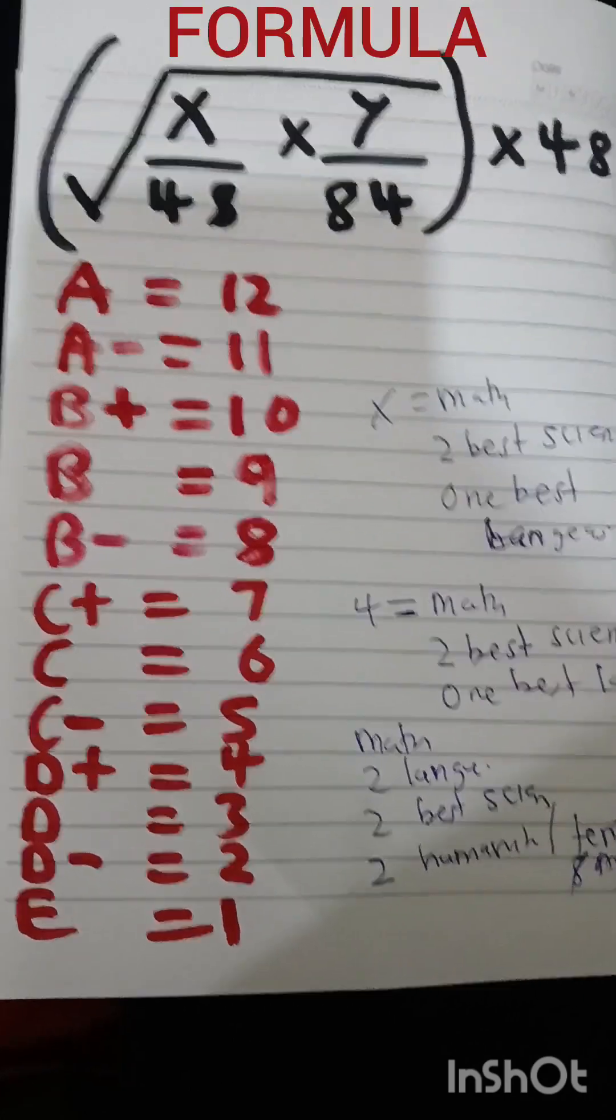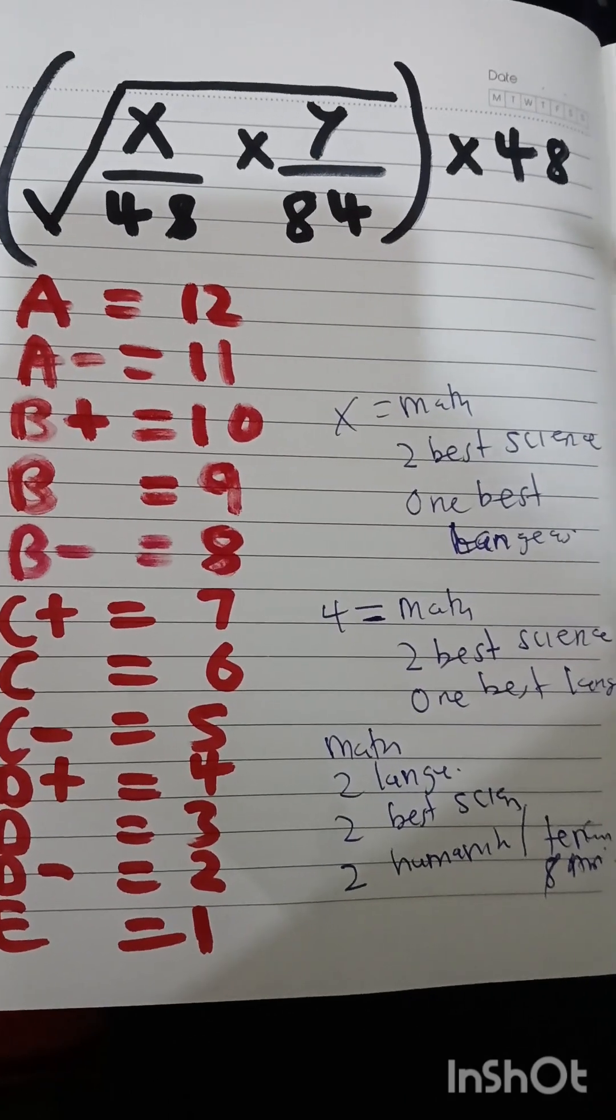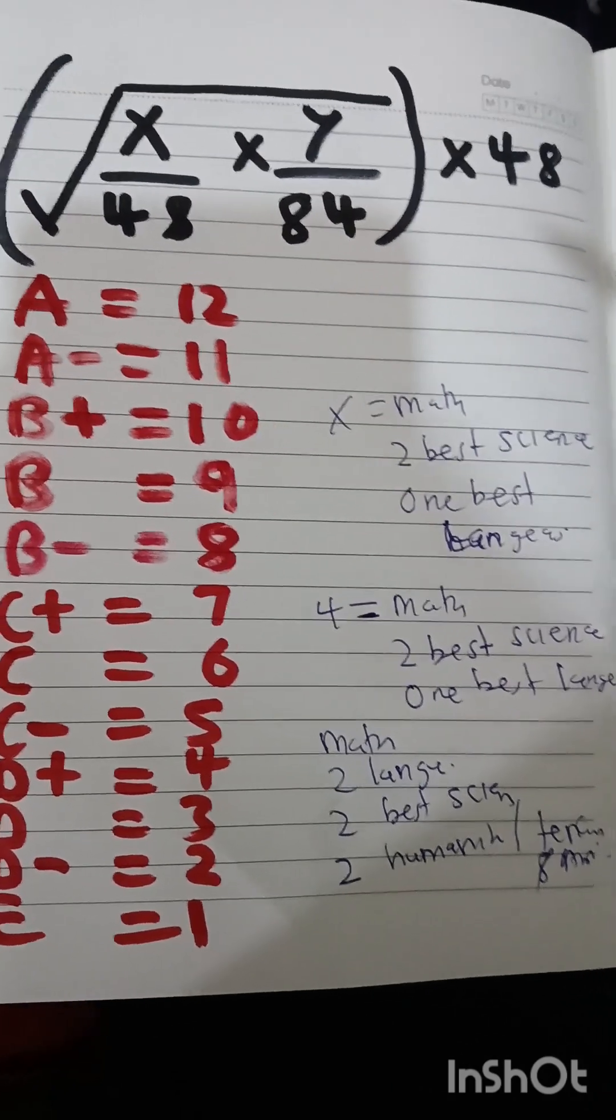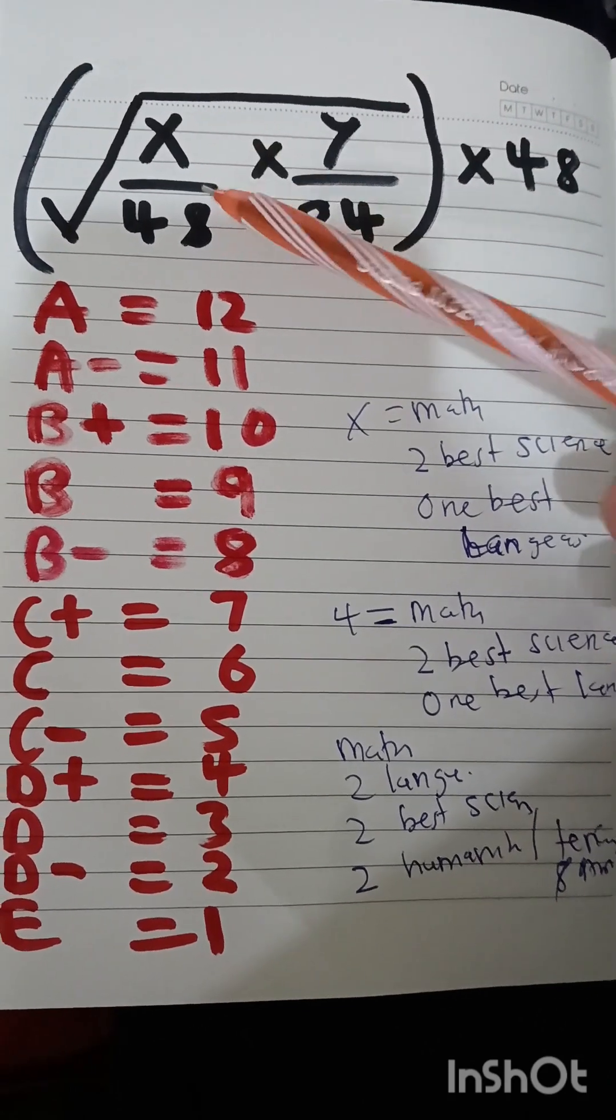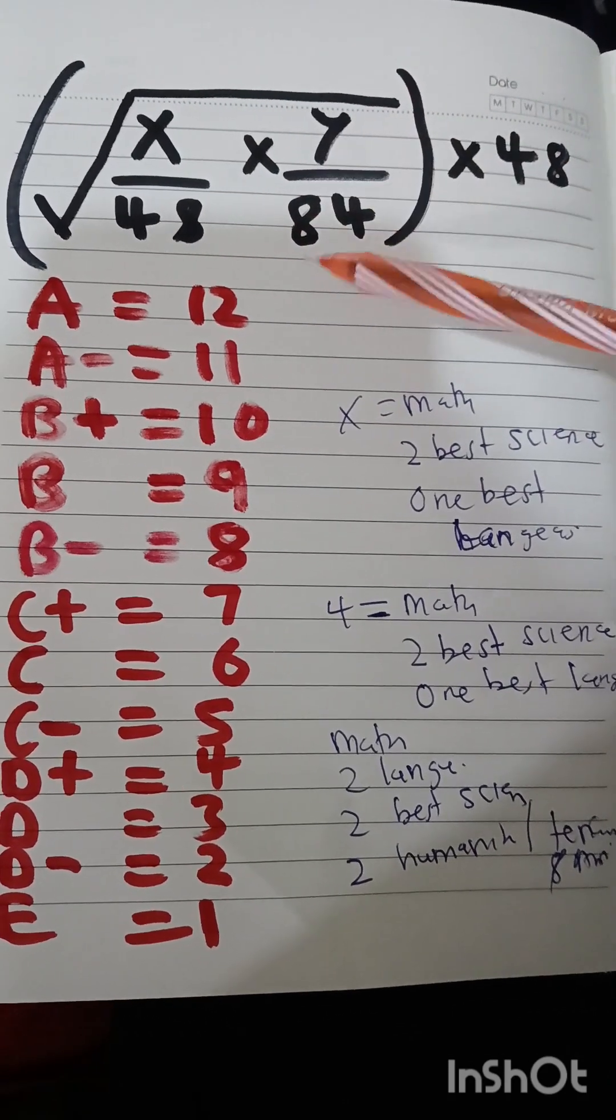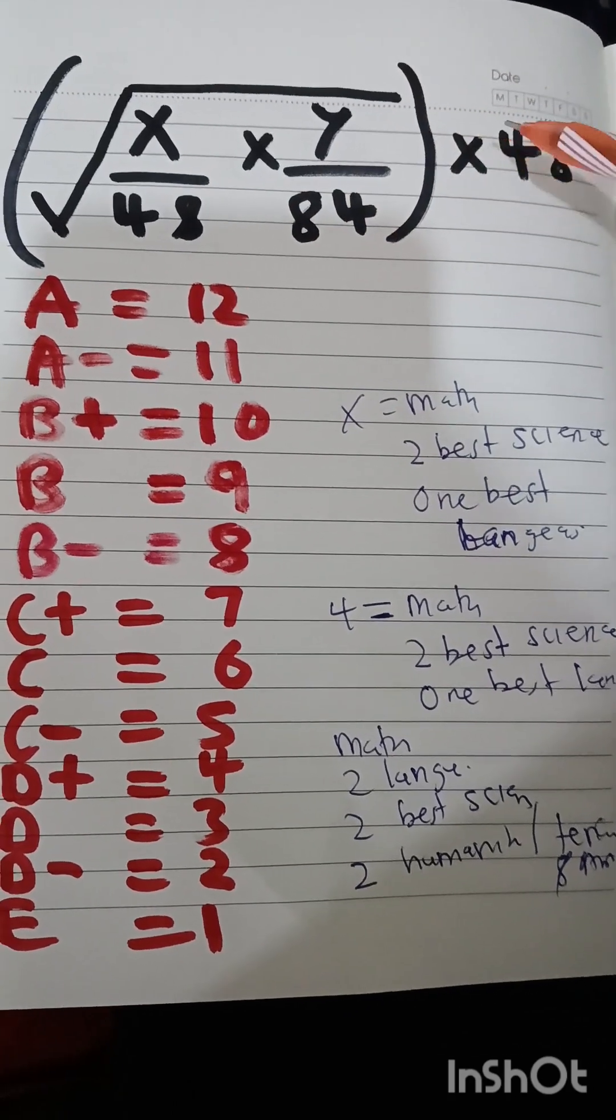Hello guys, my name is Mapesa Moses. Welcome to this session. I'll be explaining how to calculate the CUSPS cluster points. The formula is the square root of x over 48 multiplied by y over 84. The answer you get, you multiply it by 48.